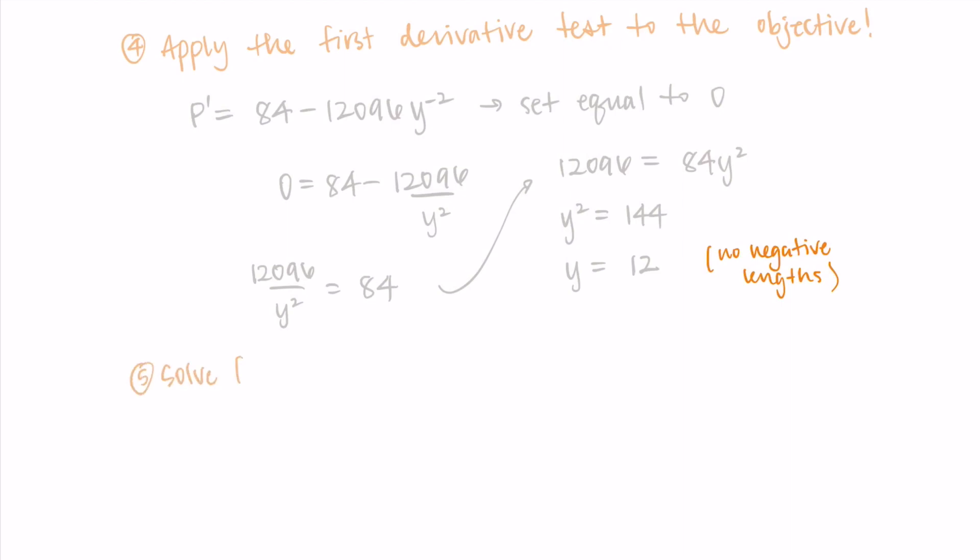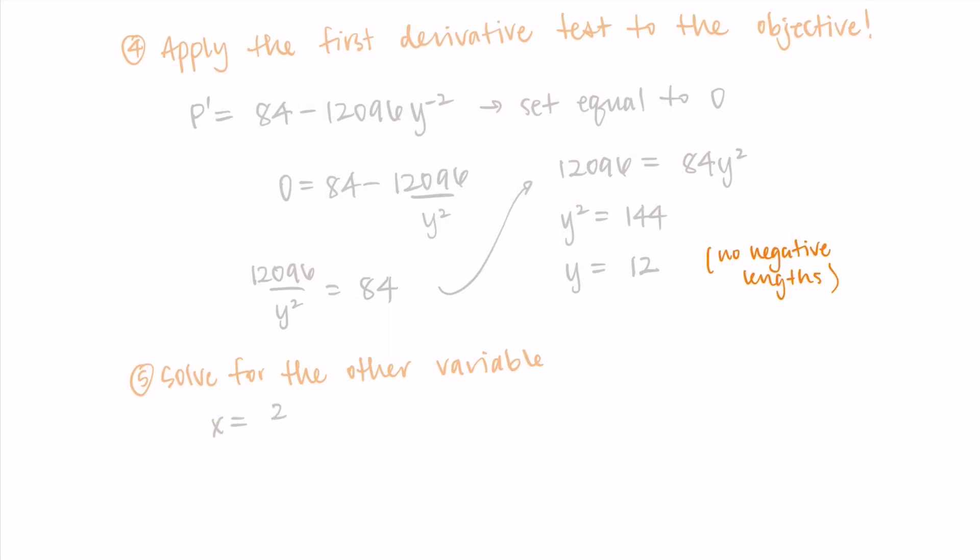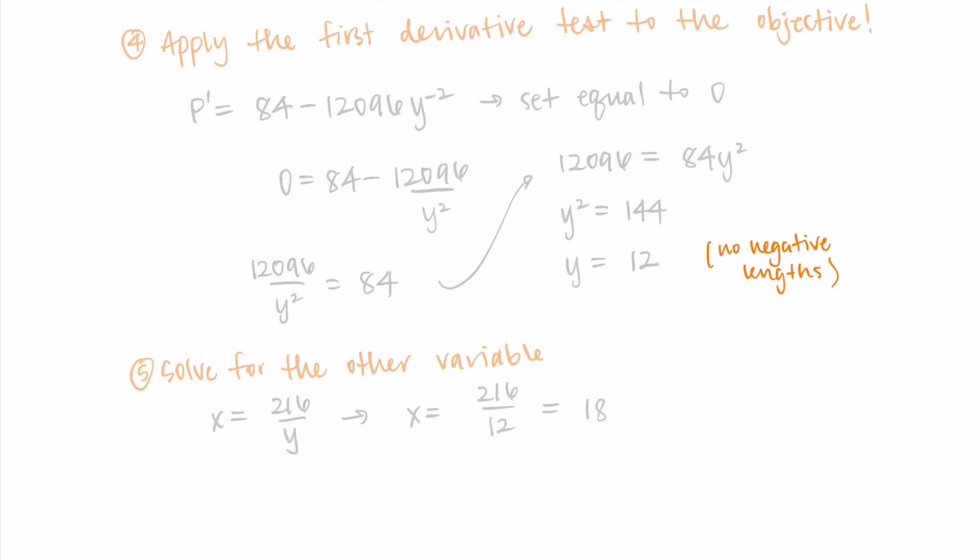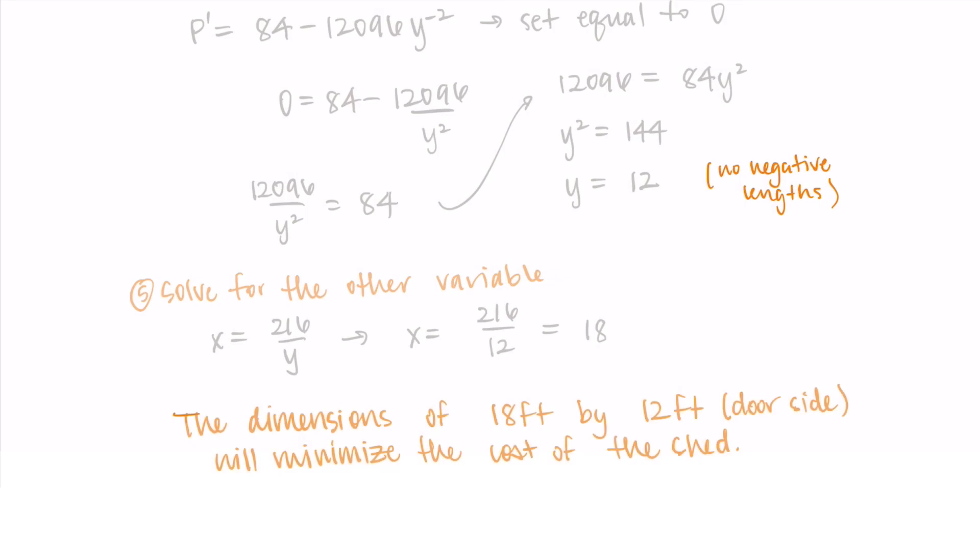And we just need the other dimension in order to finish the problem and really give the dimensions of the shed. So to solve for the other variable, I know that x is equal to 216 over y. So substituting in 12, I'm getting that x is 18. This means that the dimensions of 18 feet by 12 feet, where 12 feet is the door side of the shed, will minimize the cost.